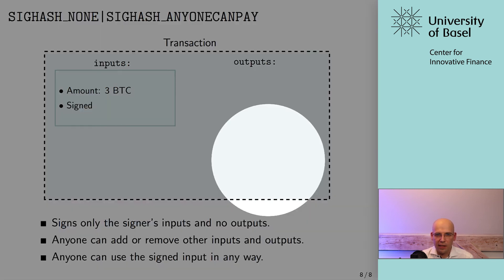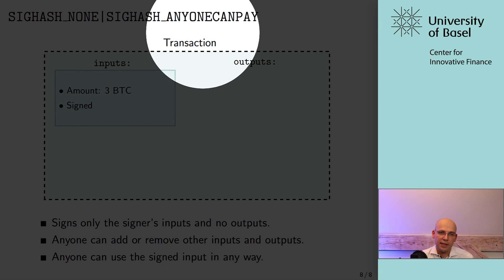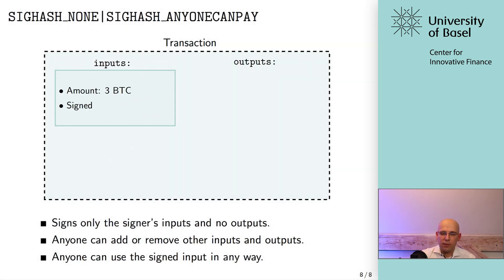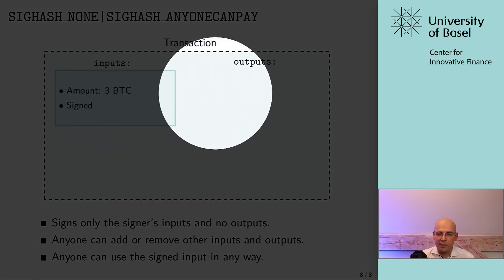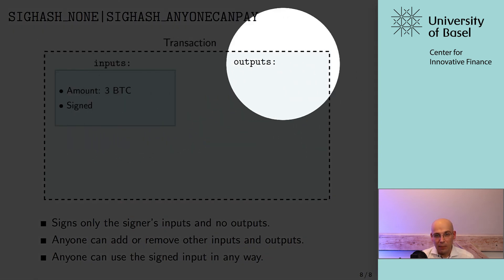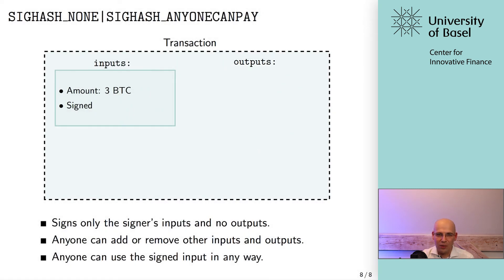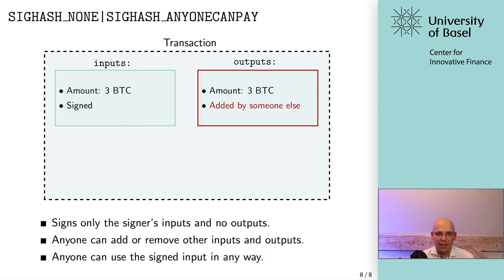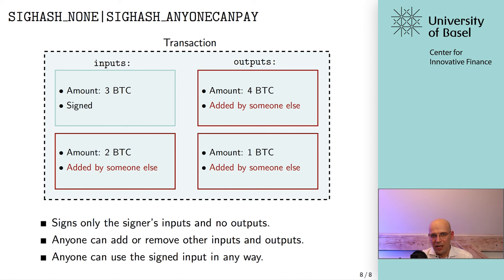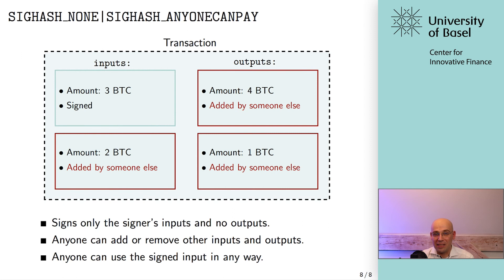SIG hash NONE anyone can pay essentially means you're going to sign just this one input, you don't care how it is spent, you can add any outputs, and you're not going to sign any outputs — so outputs can be changed or new ones added. You can also add additional inputs. It's basically just throwing money into a transaction and saying you don't care what happens with it. It's hard to come up with practical examples, but as you will see later on, there still might be some use cases when you get to more complex stuff — the economic scripting part — and that's definitely why it is part of this lecture.